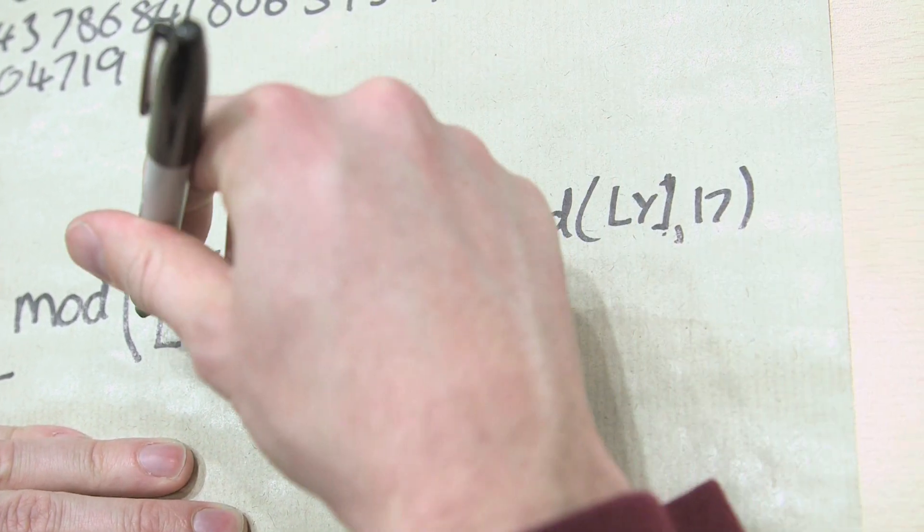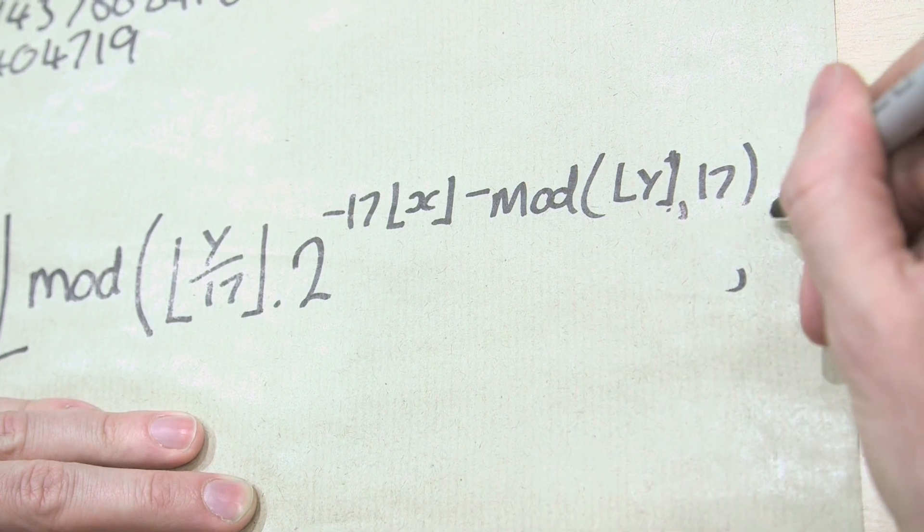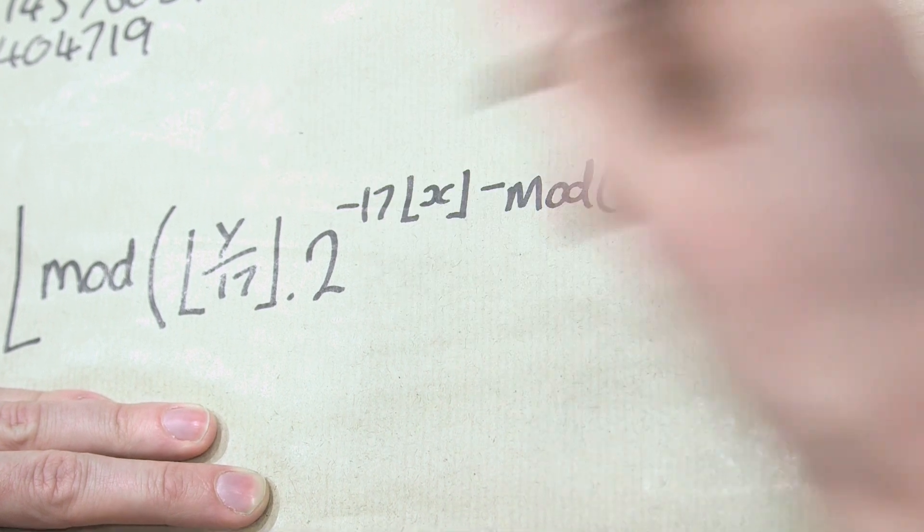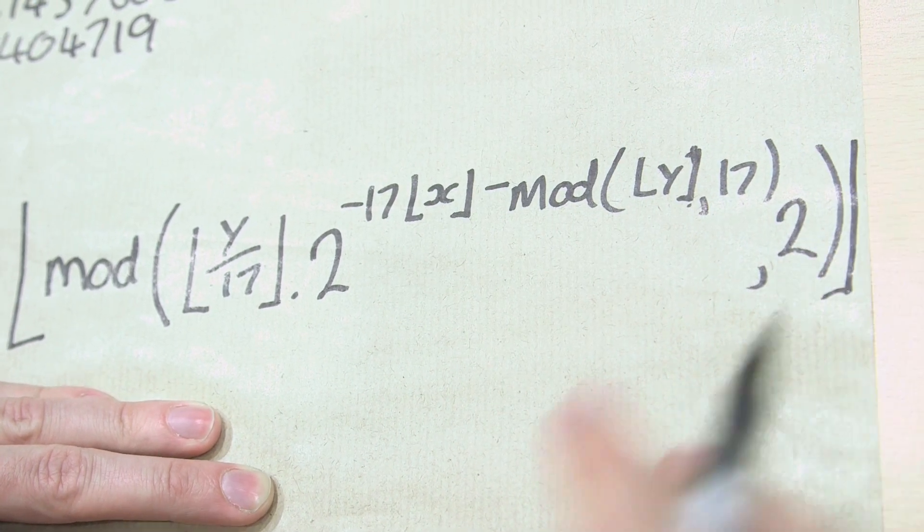And that is mod 17, so I close that mod there, and then this whole thing, once you've got that, you then, that open mod is 2, close that, and then close the floor function.